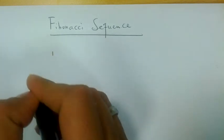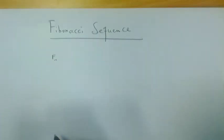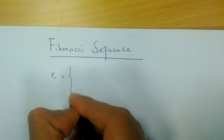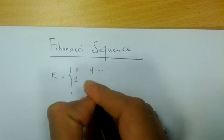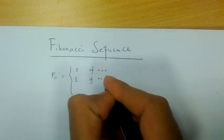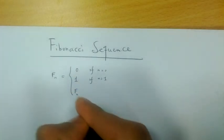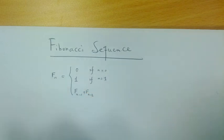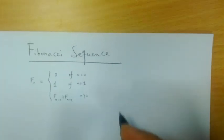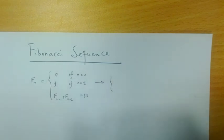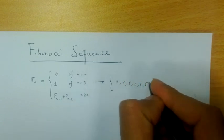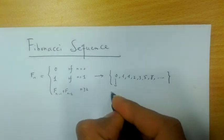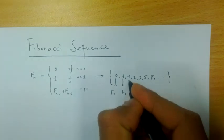We know that this sequence f(n) is defined as 0 if n is equal to 0, 1 if n is equal to 1, and f(n-1) plus f(n-2) for n greater than or equal to 2. So if I write some of the terms of this sequence, I have 0, 1, 1, 2, 3, 5, 8, etc. So this will be f(0), f(1), f(2), etc.